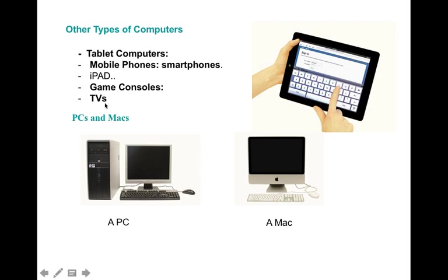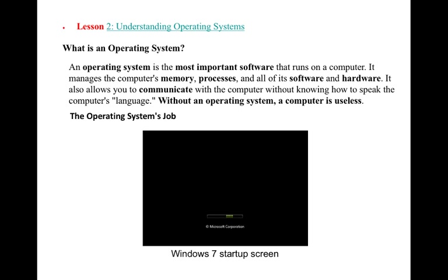A smart TV is a type of TV that we can connect to the internet, so it can also be considered part of the computer family. And here we have two pictures — a PC and a Mac. What is the difference? There's not much difference because both are desktop computers, just from different companies.